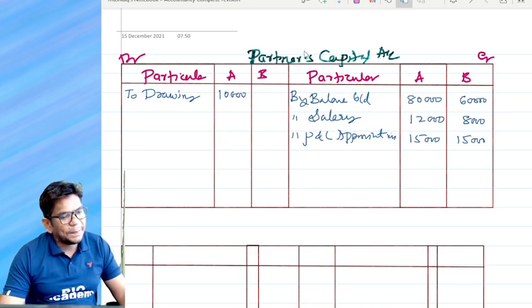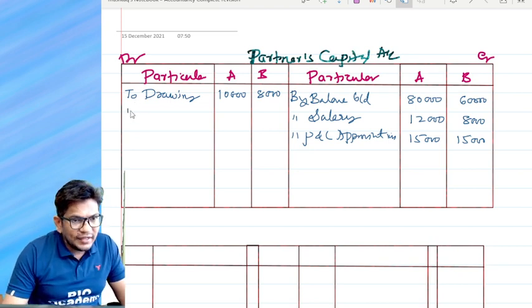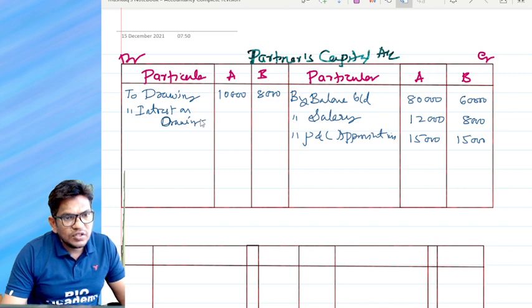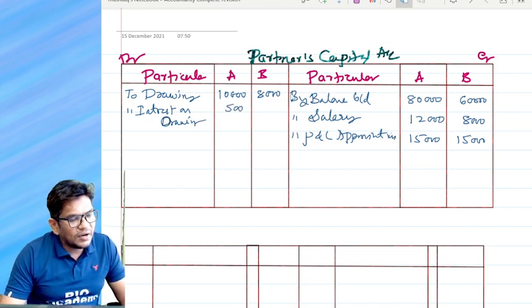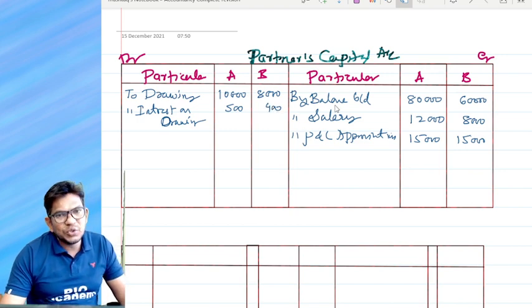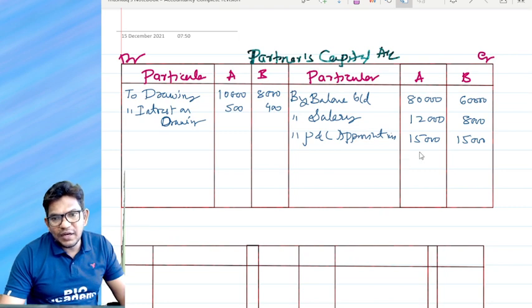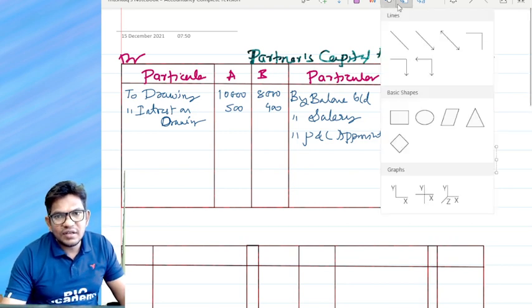Next is interest on drawings. Remember, interest on drawings. So interest on drawings, take it somewhere around 500. You can take 400. The last part, what we do, we are going to make a total here. Total on the debit side.